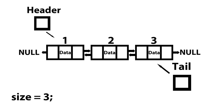So to get started, you can see we have our doubly linked list here. The only thing different that you might notice are these numbers on top of the nodes, and these numbers represent the position of each node. So this is position one, two, and three.